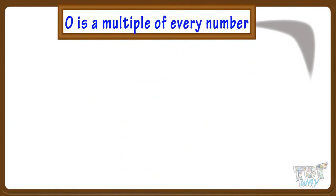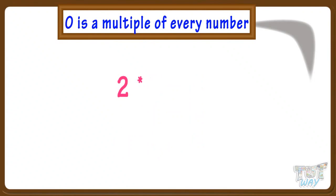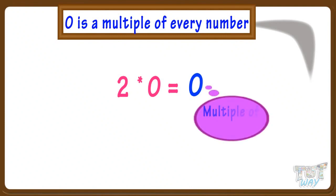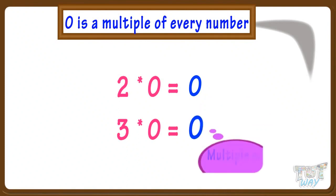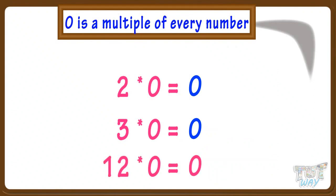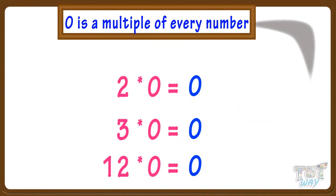Remember, 0 is a multiple of every number. A multiple of a number is any number which we get by multiplying it with any number, and we get 0 when any number is multiplied with 0. For example, 2 multiplied by 0 equals 0, so 0 is a multiple of 2. 12 multiplied by 0 equals 0, so 0 is a multiple of 12. So 0 is a multiple of every number.